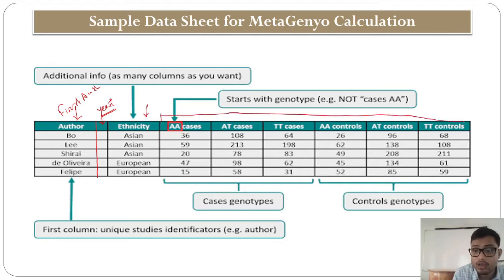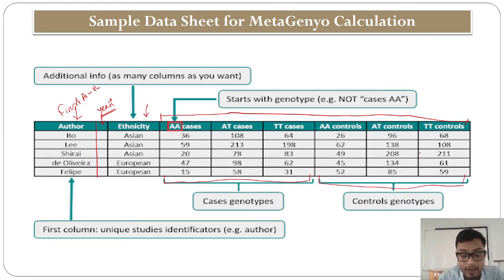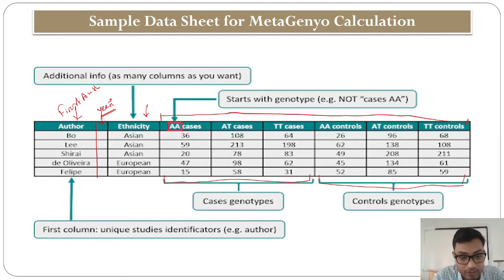Those six columns include your genotypes — the first three columns are for the case genotypes and the last three columns are for the control genotypes. I will give you a demo about how meta-analysis can be done with the help of MetaGenio and how you can prepare your data sheet for MetaGenio.